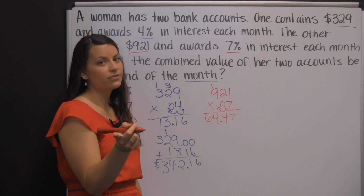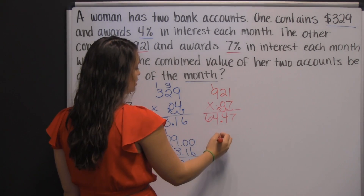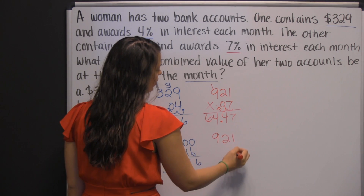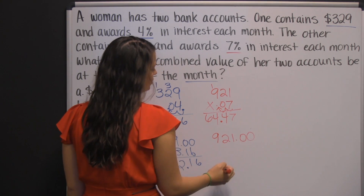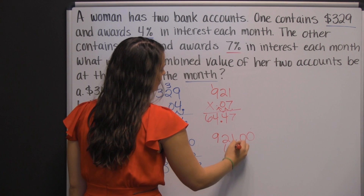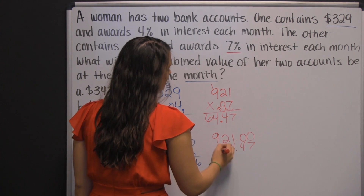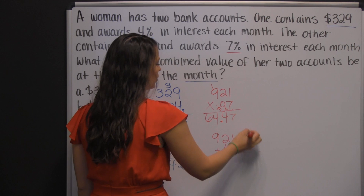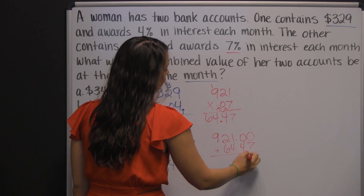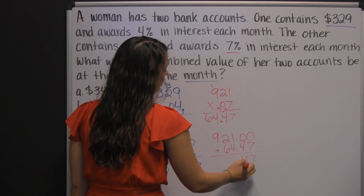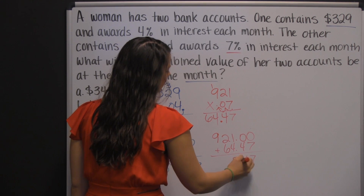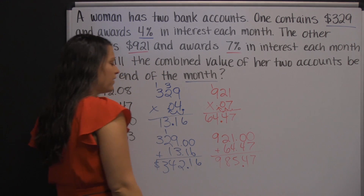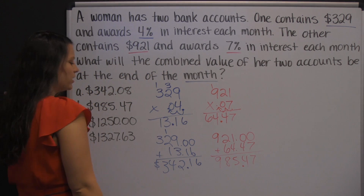To find the total for that account, you just need to add the $921 — add that decimal and those zeros so you can line them up — and the $64.47. We have 7, 4, bring down your decimal, 1 plus 4 is 5, 2 plus 6 is 8: $985.47.